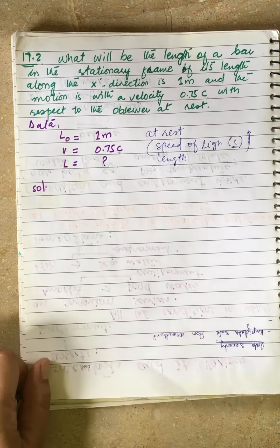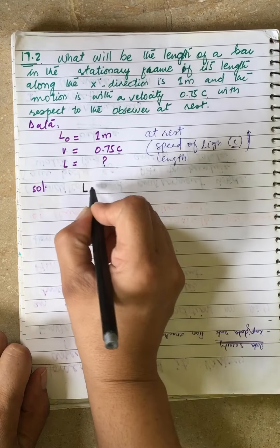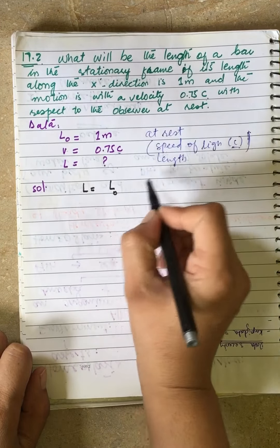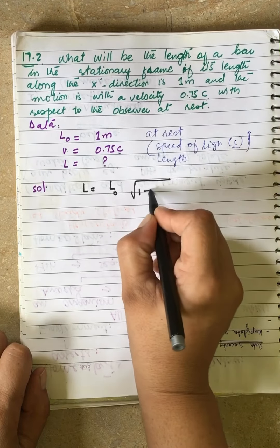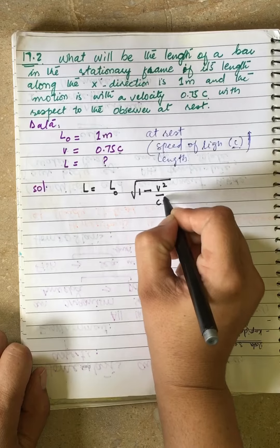We have a formula: L equals L₀ under root 1 minus v squared upon c squared.